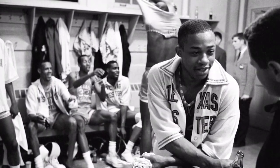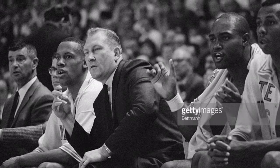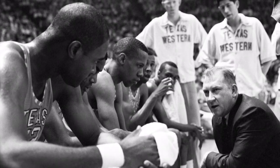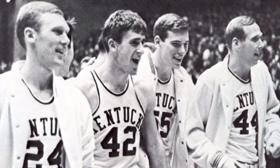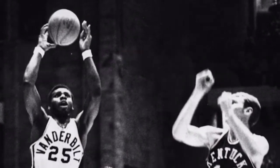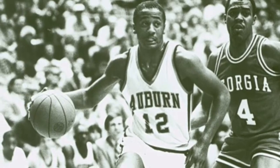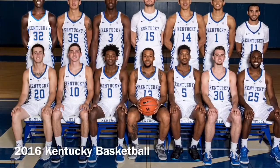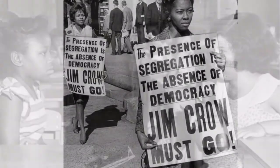It was a game that would become one of the most important sporting events in the social justice movement. Texas Western's coach Don Haskins started five black players and went on to play only seven of his players, all of them African American, against Adolph Rupp's all-white Kentucky team. Within two years of Texas Western's monumental victory, every top college in the south had an African American player on their roster. Haskins' stand resulted in a wave that led to integration in college sports, making it possible for all players to play regardless of race.